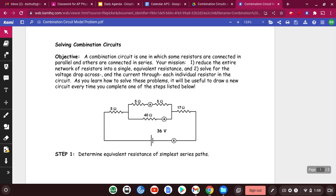A combination circuit is one in which some resistors are connected in parallel and others are connected in series. Your mission is to reduce the entire network of resistors into a single equivalent resistance and to solve for the voltage drop and the current through each individual resistor in the circuit.